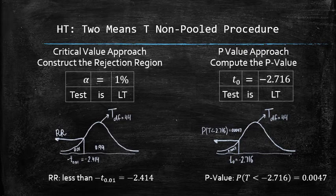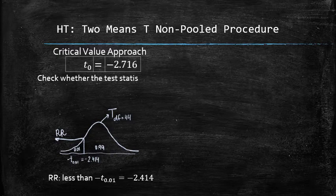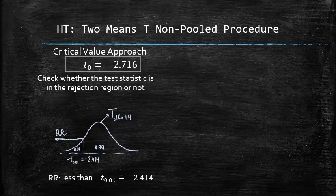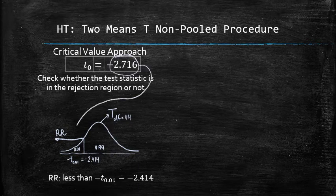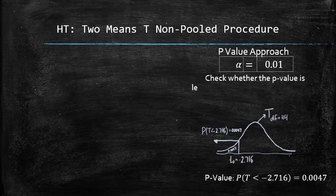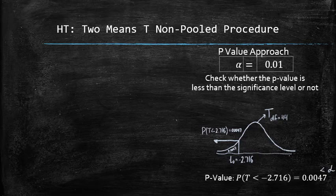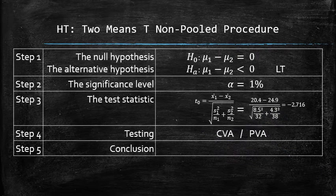Next, we decide whether to reject or not reject the null hypothesis. In the critical value approach, our test statistic is negative 2.716, which is to the left of negative 2.414, thus it is in the rejection region. In the p-value approach, our p-value is 0.0047, which is less than alpha. Both approaches suggest that we do reject the null hypothesis in favor of the alternative.